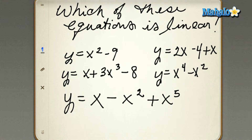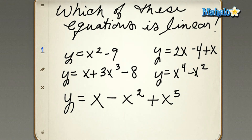y equals x squared minus 9. y equals x plus 3x cubed minus 8. y equals x minus x squared plus x to the fifth. y equals 2x minus 4 plus x. y equals x to the fourth minus x squared.